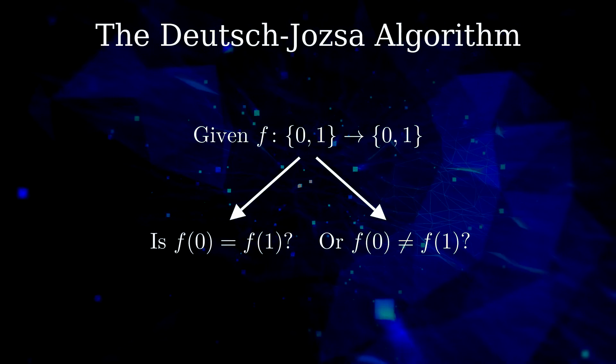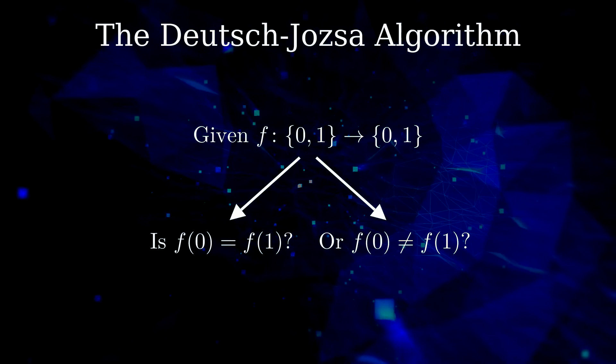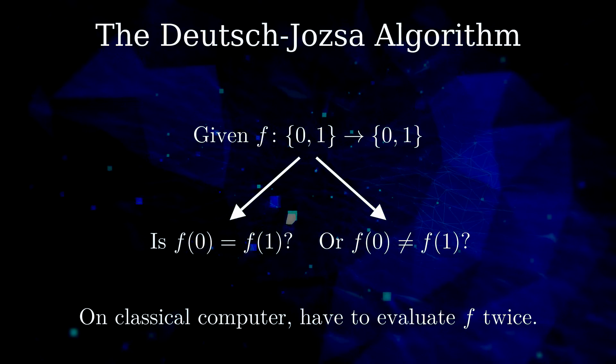On a classical computer, we need to evaluate the function twice, one time for each value, to know which is the case.